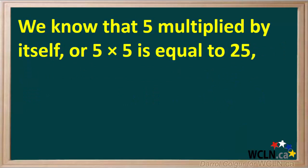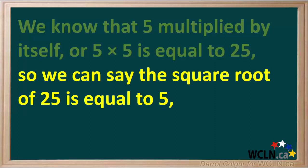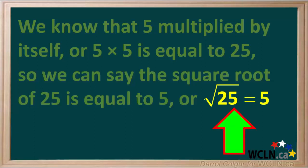We know that 5 multiplied by itself — or 5 times 5 — is equal to 25. So we can say that the square root of 25 is equal to 5. Or we can show it with symbols, and we read it as: the square root of 25 equals 5.